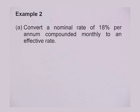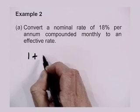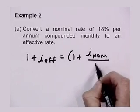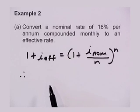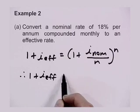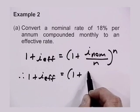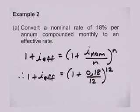Let's look at the first example: convert a nominal rate of 18% per annum compounded monthly to an effective rate. What is the formula? Let's write it down: 1 plus I_EF is equal to 1 plus I_nom over n, to the power of n. We're looking for I_EF, so: I_EF equals 1 plus 0.18 divided by 12, to the power of 12. One thing you must realize with this formula — you always work over a period of a year when you convert from one interest rate to the other.